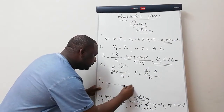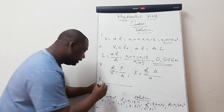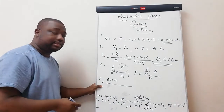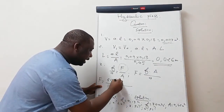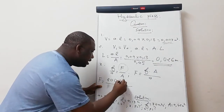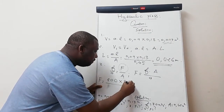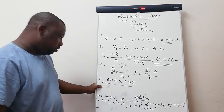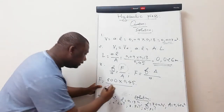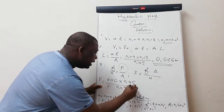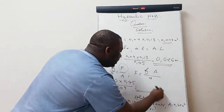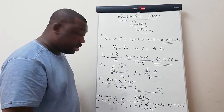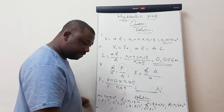Substituting: small f = 300 N, big A = 0.45 m², small a = 0.09 m². Calculating gives big F = 1500 N.